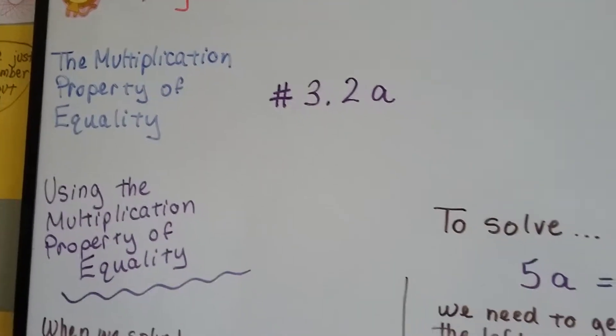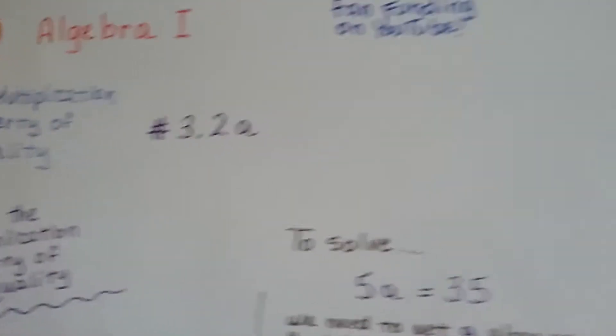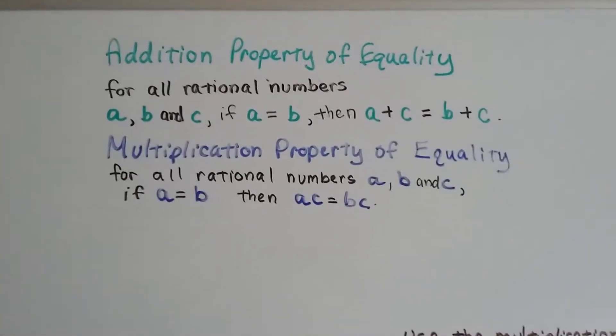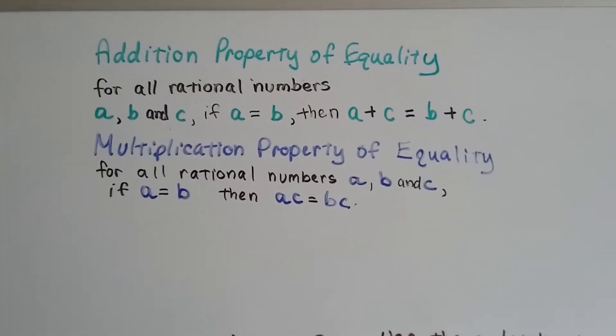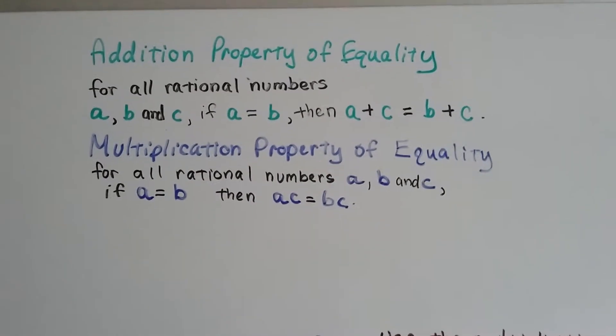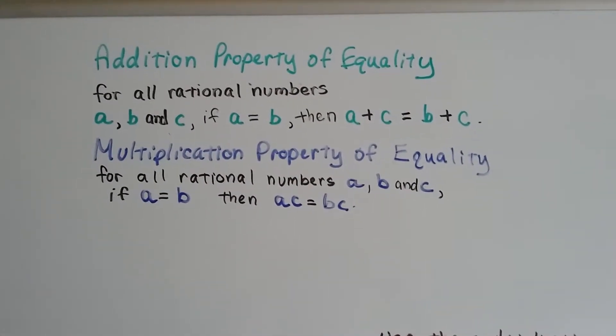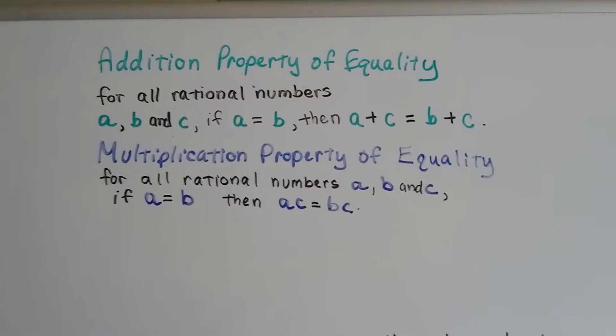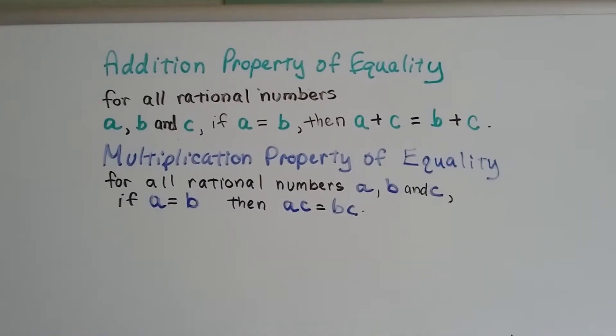We're going to use the multiplication property of equality to solve some problems in this video. If you remember from the last video, we said the addition property of equality says for all rational numbers a, b, and c, if a and b are identical and they equal each other, then we can add a to c, and it's going to be the same as adding b to c.